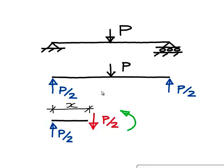That is the internal moment which must exist at that cut to maintain equilibrium. To find its value we take moments about the cut. The shear force P upon 2 passes through the cut and is ignored, and we see that the bending moment at that cut must equal P upon 2 multiplied by the distance x to the reaction force. The shear force is a constant regardless of where the cut is made, while the bending moment varies linearly with the value of x.